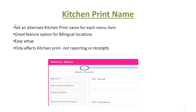The first feature that was high in demand was kitchen print name. This allows you to set an alternate item name to print on the remote tickets. This is great for bilingual locations and it's easy to set up. Remember, this only affects your kitchen print or bar remote print, not reporting or receipts.